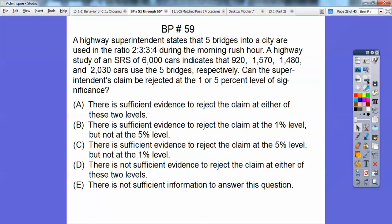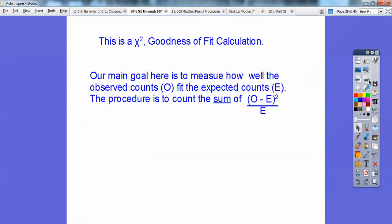So a highway superintendent states that five bridges into a city are used in the ratio of 2 to 3 to 3 to 4 during the morning rush hour. This right here smells to me like chi-squared goodness of fit right there. A highway study of an SRS of 6,000 cars indicates, here's the observed values right here. 920, 1,570, 1,480, and 2,030 cars used on the five bridges, respectively. These are the observed. So can the superintendent claim that by rejecting at the 1 or 5 percent level of significance? So what we need to do is get our expected counts. So if I add these up, 2 plus 3 plus 3 plus 4, that equals 12.